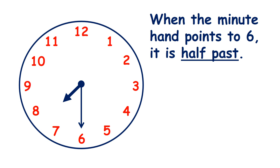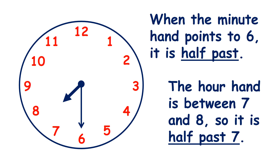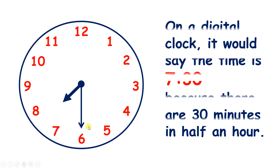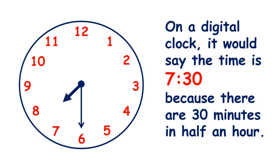When the minute hand points to 6, like it does here, we don't say it's o'clock — we say it's half past. Here the hour hand is between 7 and 8, so we say that it's half past 7, because the time is in the middle of 7 o'clock and 8 o'clock. On a digital clock, it would say 7:30, because there are 30 minutes in half an hour.